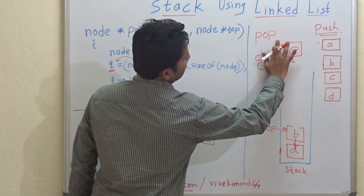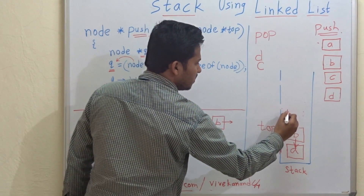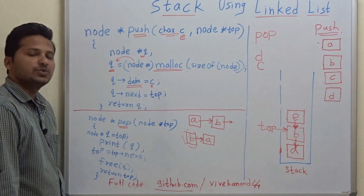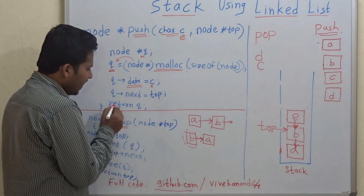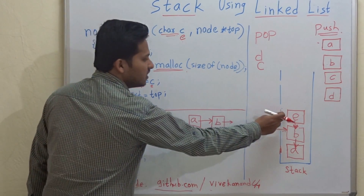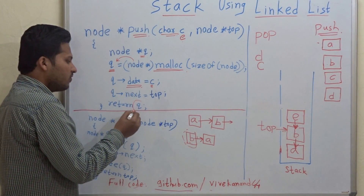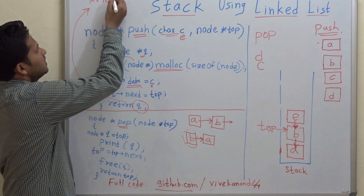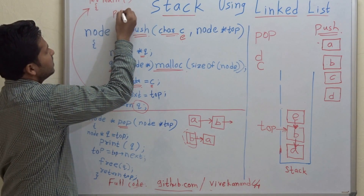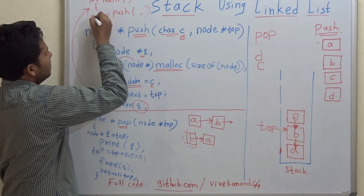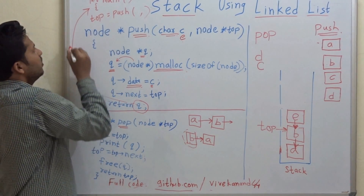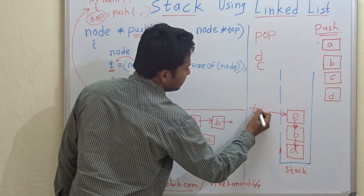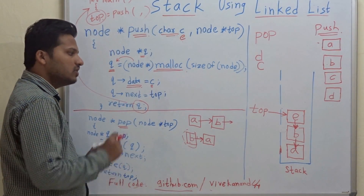Now the node is introduced into the stack with its next pointer pointing to B. We return Q from the push function, and Q is the top of the stack. In the main function, push is called with two parameters, and the returned Q is assigned to the top pointer. This is how top will now point to E, the new top of the stack.